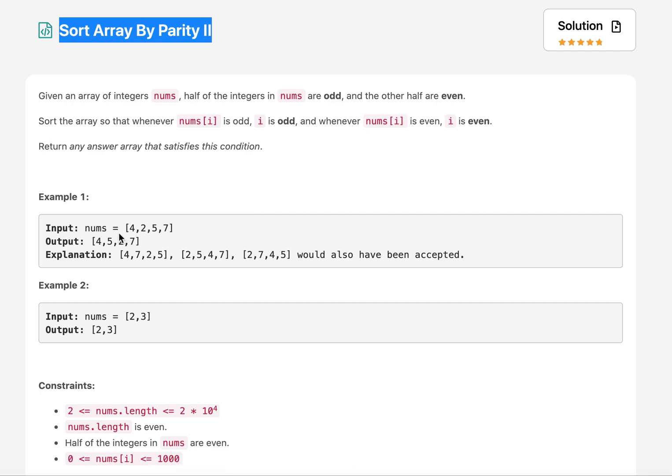For example here the input array is given to us as 4, 2, 5, 7. 4 is an even number at the even index 0 so we are good. 2 is an even number at an odd index we have to swap this. 5 is an odd number at an even index we need to update this again. So what we are going to do we will swap 2 with 5.